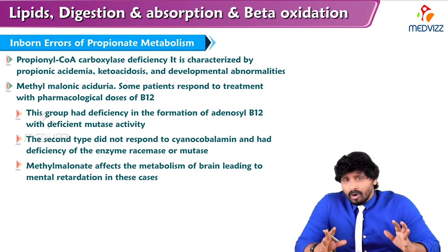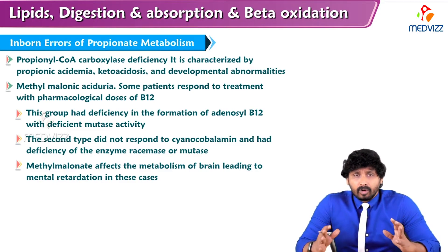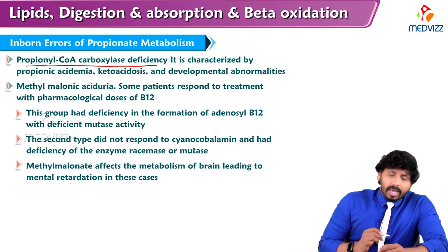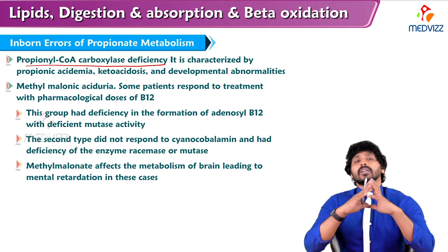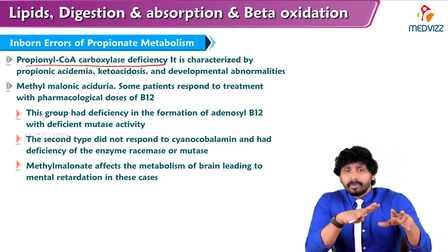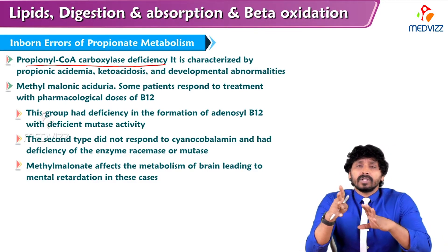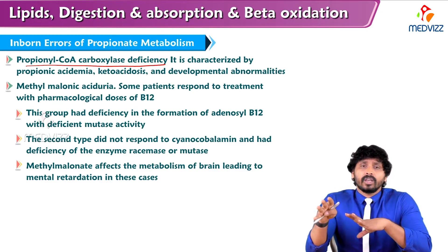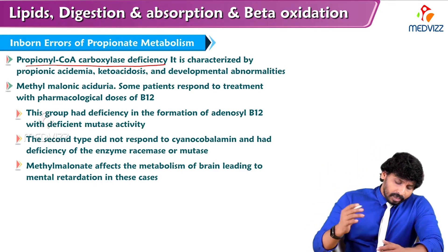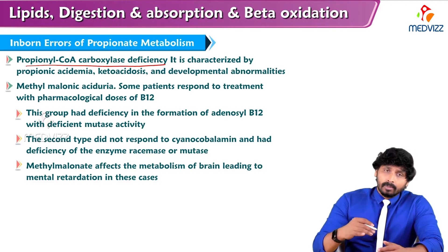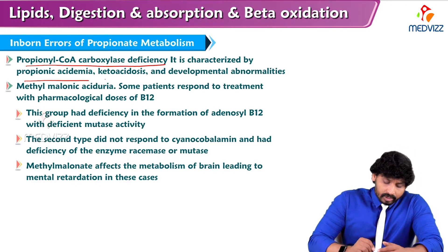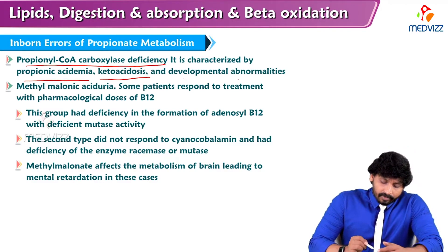What are the inborn errors related to propionate metabolism? Propionyl-CoA carboxylase deficiency: when a person is deficient of propionyl-CoA carboxylase, propionyl-CoA cannot be converted to D-methylmalonyl-CoA. What happens is propionyl-CoA accumulates in the body, causing propionic acidemia, leading to ketoacidosis and developmental abnormalities.